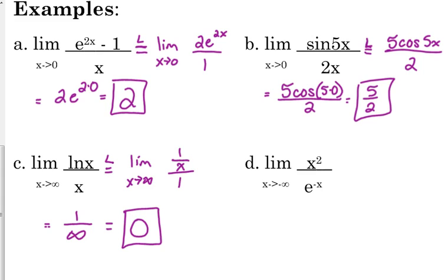So let's look at this last example. The limit as x approaches negative infinity of x squared over e to the negative x. So if we plug in negative infinity, we've got positive infinity squared on the top, e to the infinity, it's still an infinity, right? So we need to apply L'Hôpital's rule. So the derivative of x squared is 2x. The derivative of e to the negative x is negative e to the negative x.